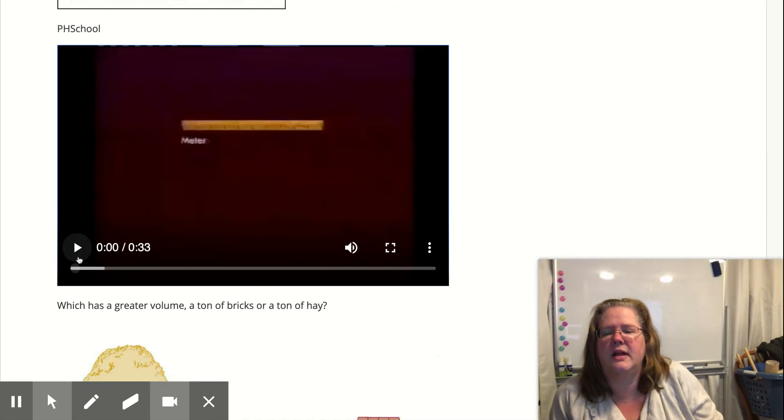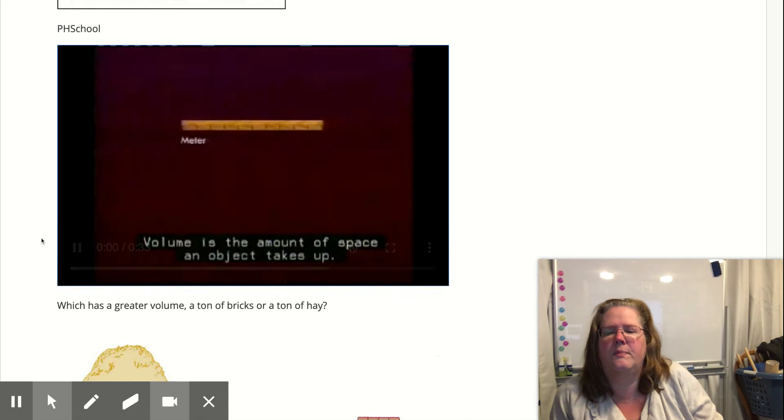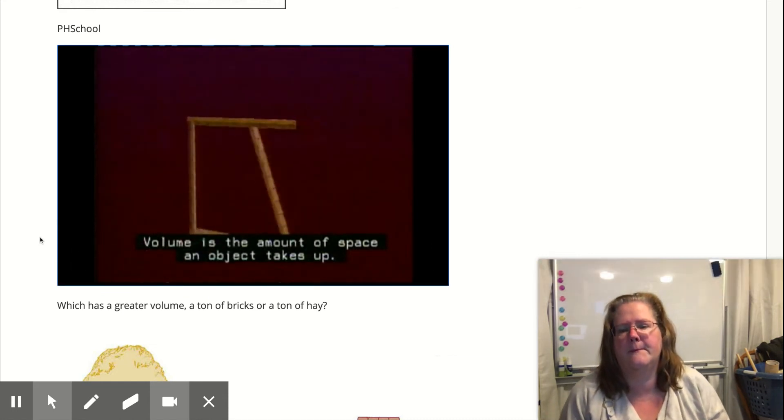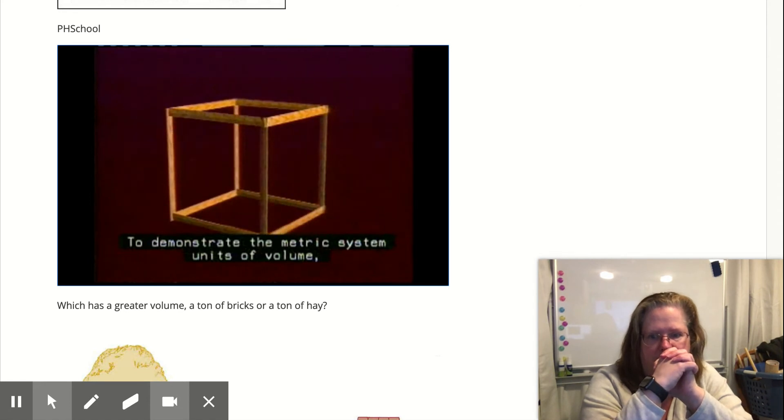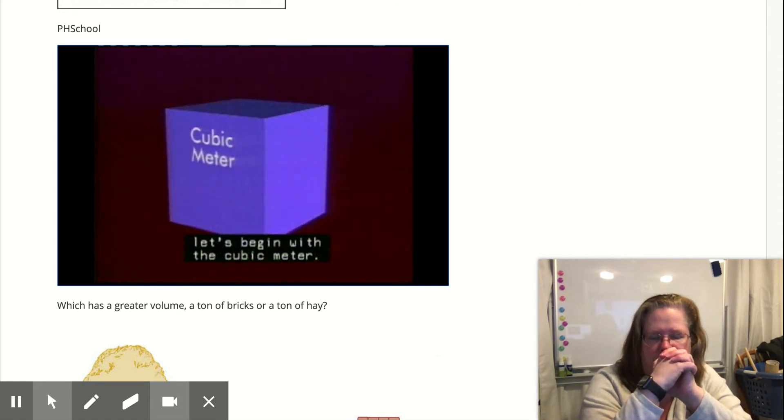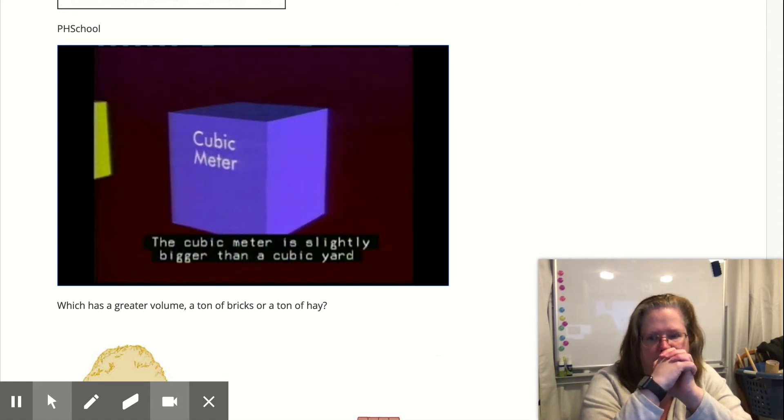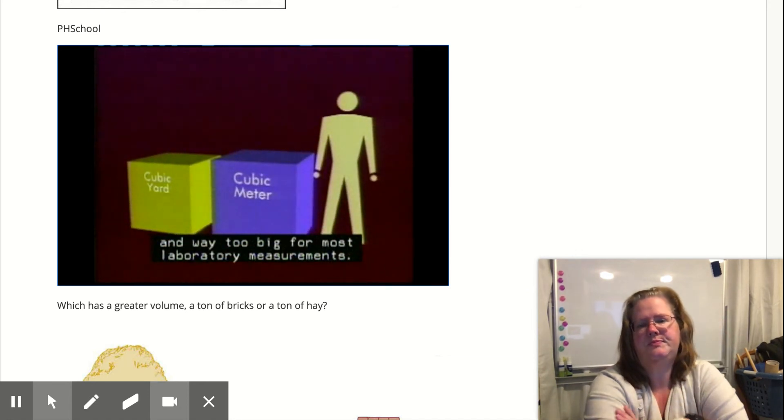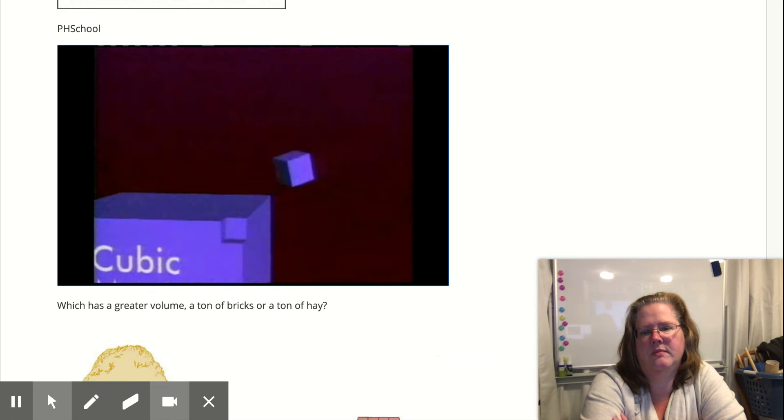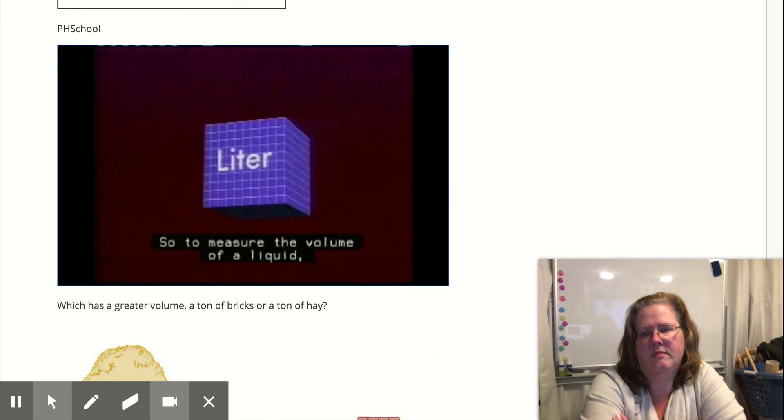So let's take a quick look at this. Volume is the amount of space an object takes up. To demonstrate the metric system units of volume, let's begin with the cubic meter. The cubic meter is slightly bigger than a cubic yard and way too big for most laboratory measurements. So to measure the volume of a liquid, we use the liter.